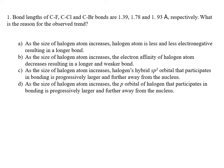Answer C: as the size of the halogen atom increases, halogen's hybrid sp3 orbital that participates in bonding is progressively larger and further away from the nucleus. This is not correct, because in the valence bond model we use to explain bonding of carbon to halogen, we assume that the halogen atom is not hybridized — it utilizes its non-hybridized p orbital for bonding. So answer C is not correct, and that leaves us with answer D: as the size of the halogen atom increases, the p orbital of halogen that participates in bonding is progressively larger and further away from the nucleus. That is the correct answer.